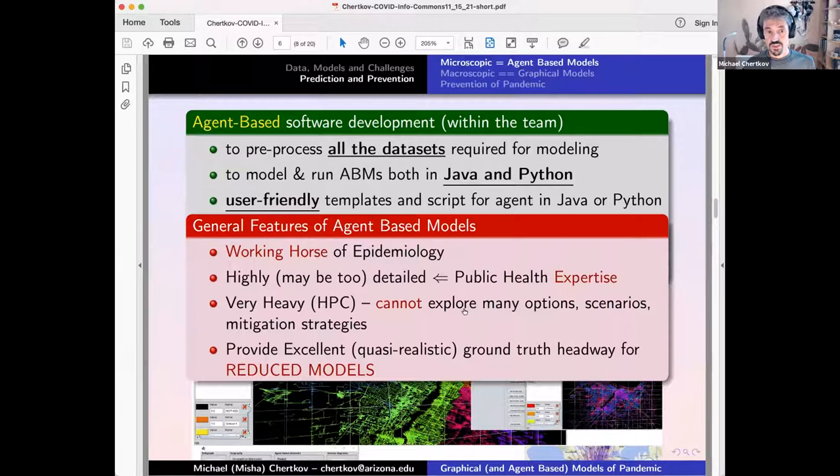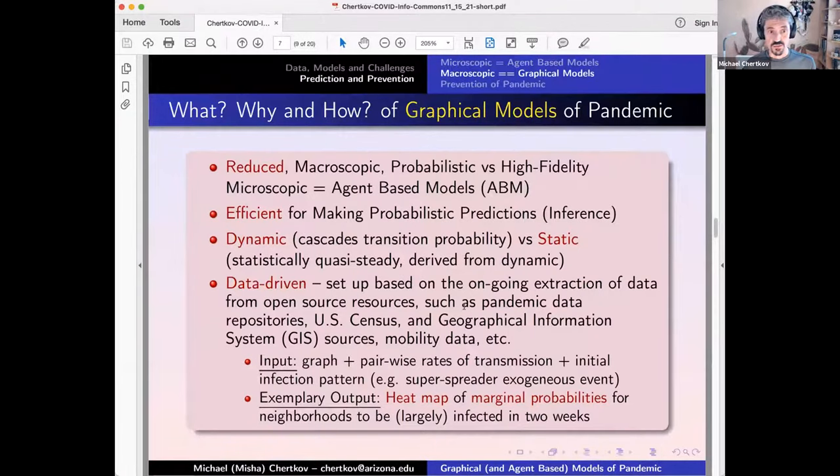The features of agent-based models—they're basically the workhorse of epidemiology. They're resolving individual people. We are talking about city of Seattle, for example, 700,000 people, so 700,000 agents. It's extremely heavy. You cannot model and you cannot prevent at this resolution, so you need to have reduced models, and that's what I'll start talking about very soon.